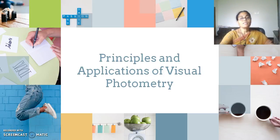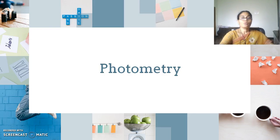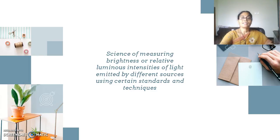Let us discuss principles and applications of visual photometry. Hello, I am Dr. Salajan. Photometry is the science of measuring brightness or relating luminous intensities of light emitted by different sources using certain standards and techniques.